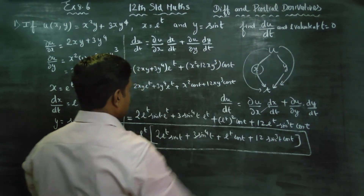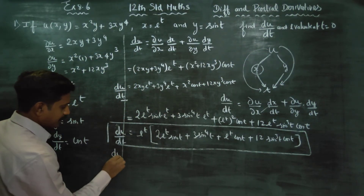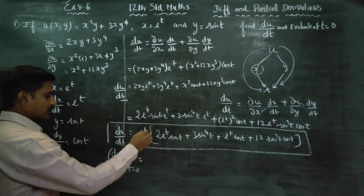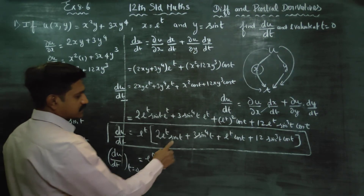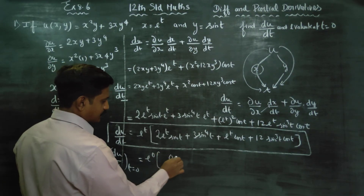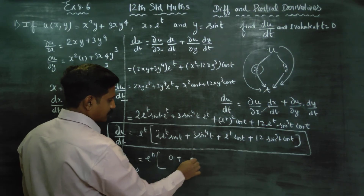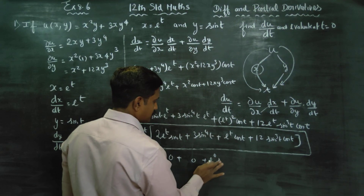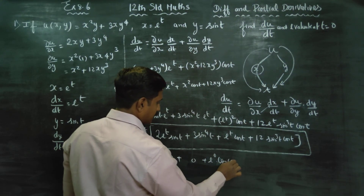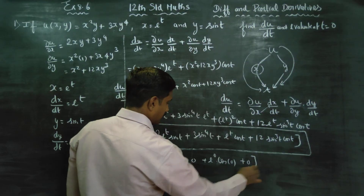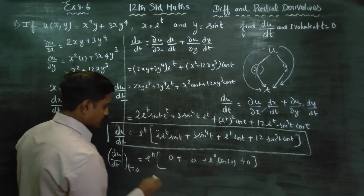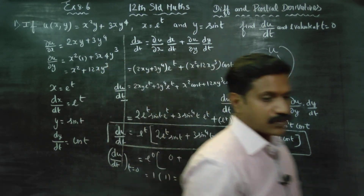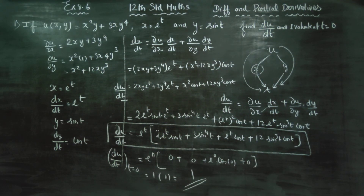When t = 0, evaluate du/dt. Substituting t = 0: e^0 = 1, sin(0) = 0, cos(0) = 1. Since sin(0) = 0, many terms vanish. e^0 = 1, and 1 into 1 = 1. Therefore the final answer when t = 0 is 1. Thank you.